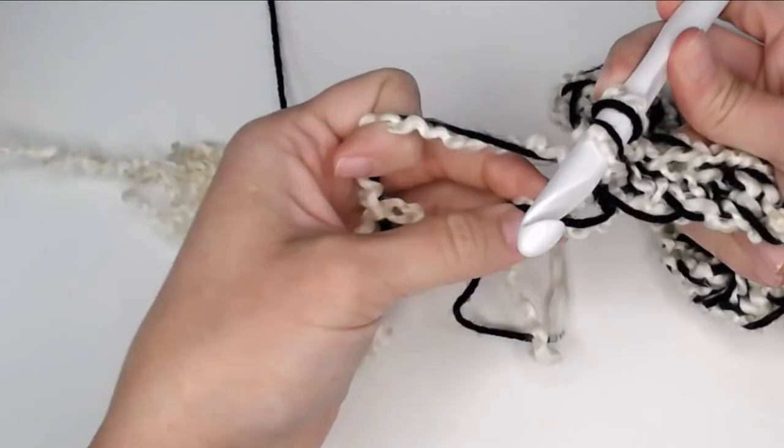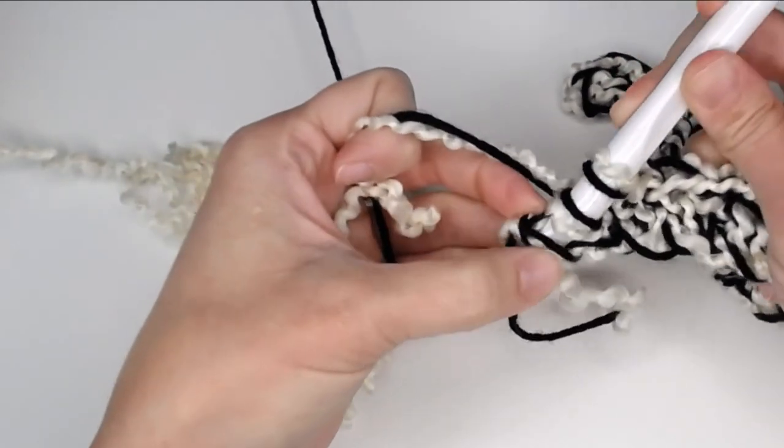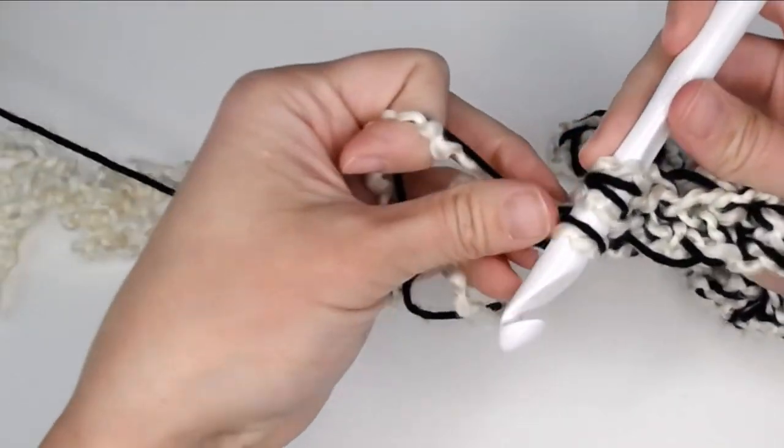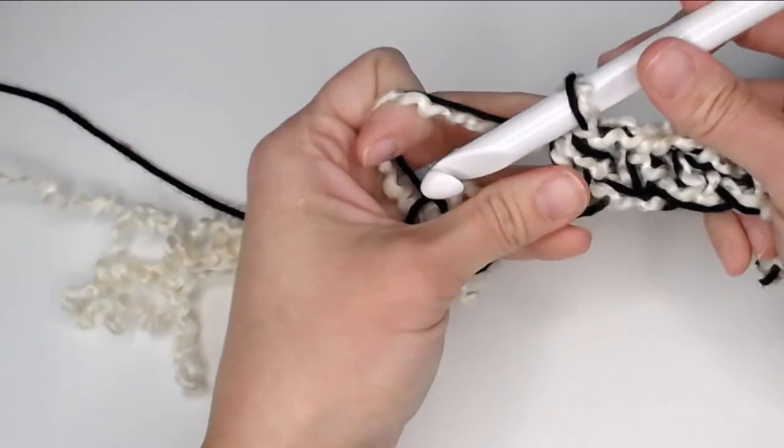All right, last half double crochet in that last chain. Perfect! We just finished row one.